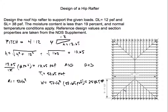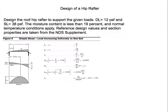For the length of the hip rafter in plan view, with 10 feet in each direction, the diagonal length is 10 × √2 = 14.14 feet. So to summarize: the beam length is 14.14 feet and the total weight is 2,532.5 pounds. We'll need both to compute the maximum moment and maximum shear.